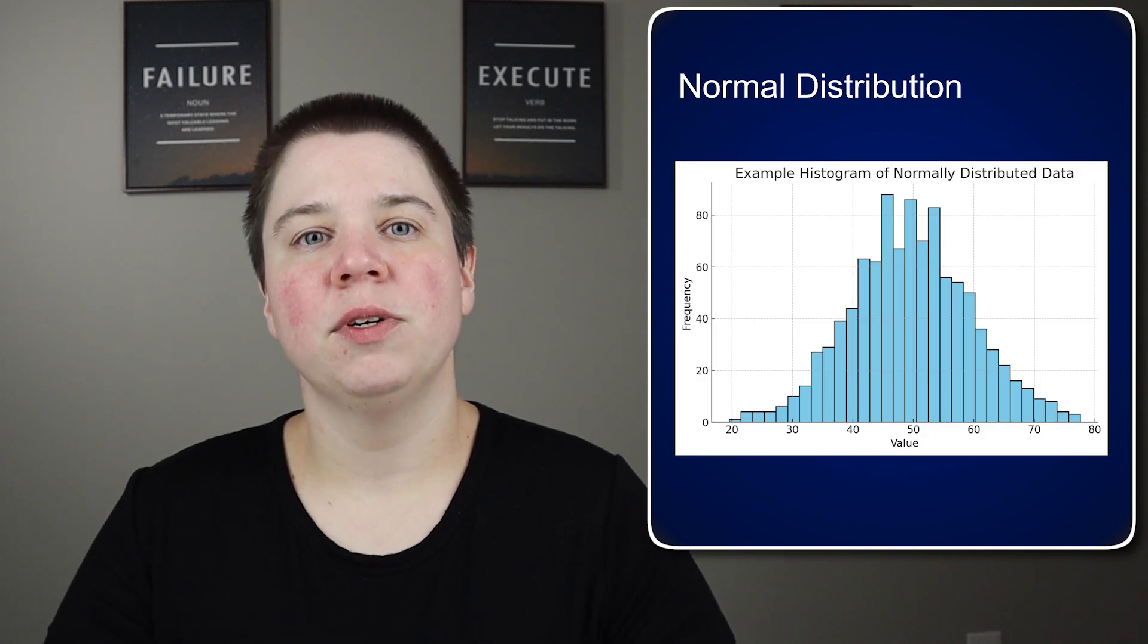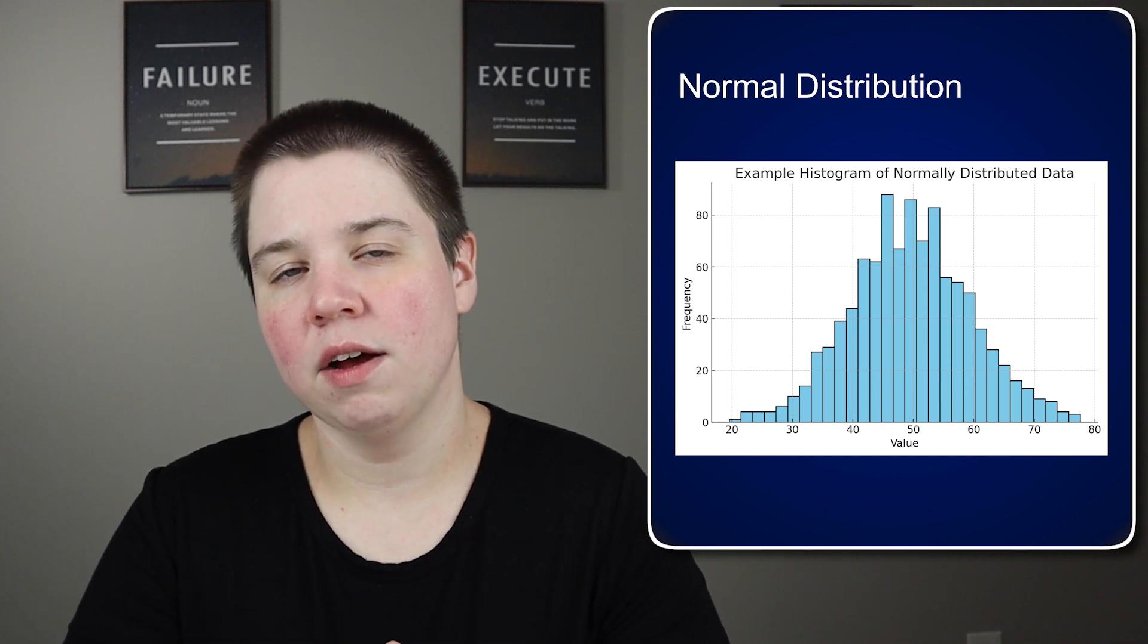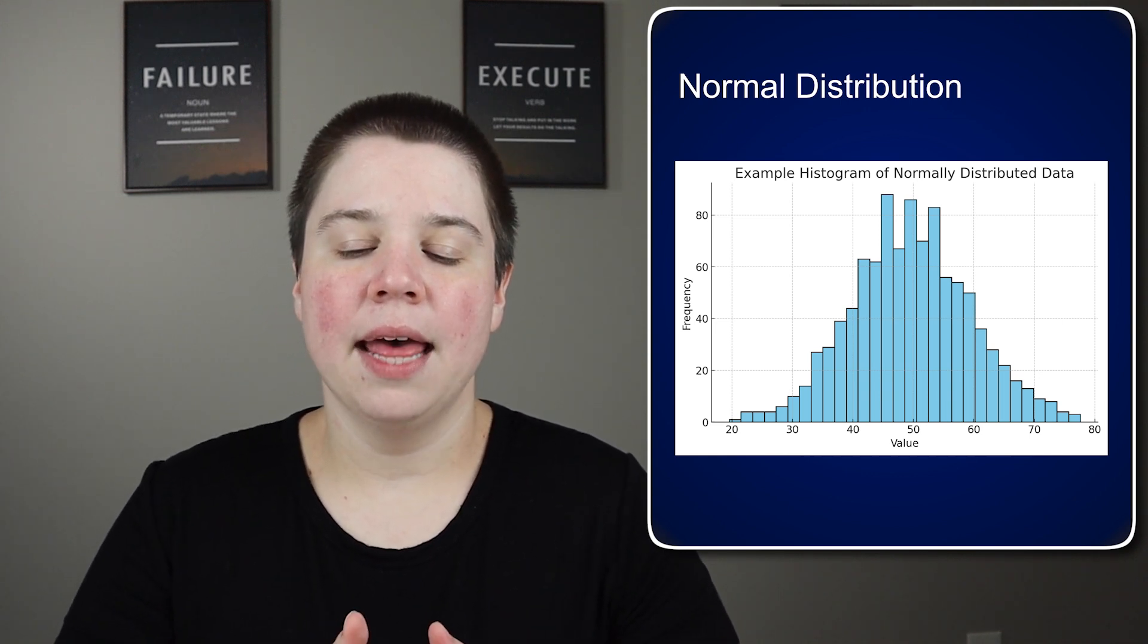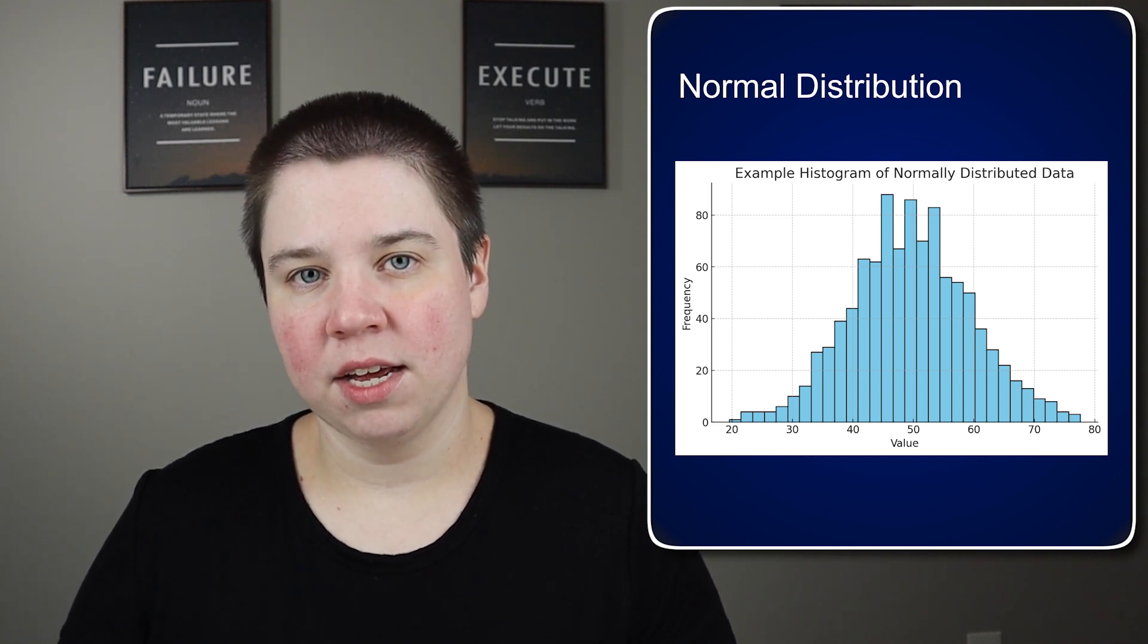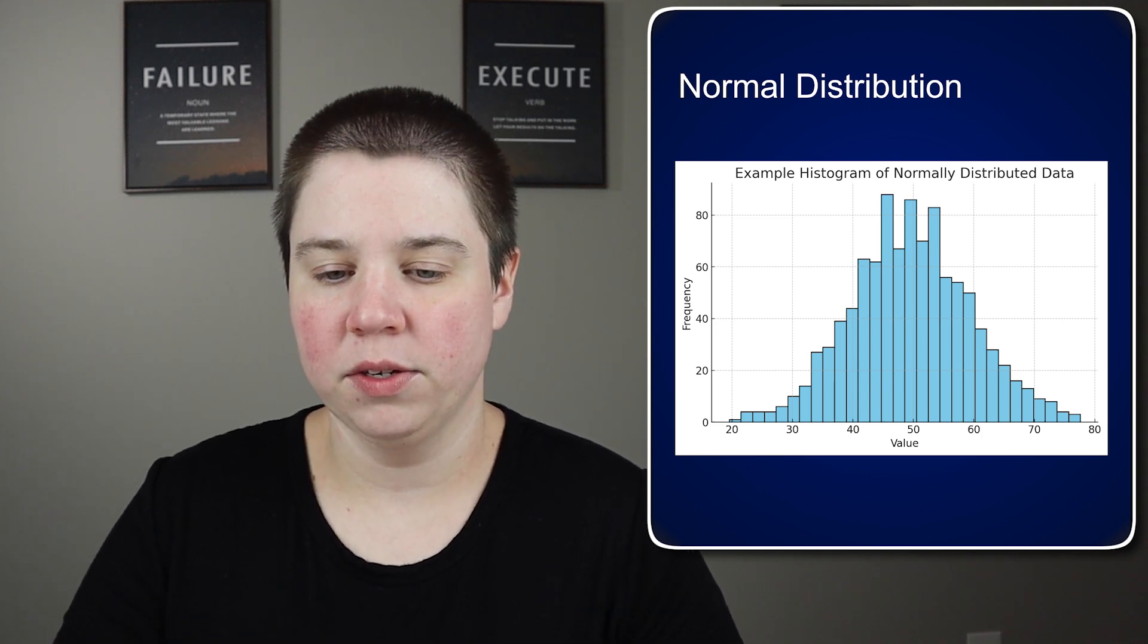A normal distribution instead looks fairly symmetrical. You have the peak in the center of your range, and then as you go outside, that peak is going to fall off and it's going to fall off symmetrically in both the higher and the lower end of values.